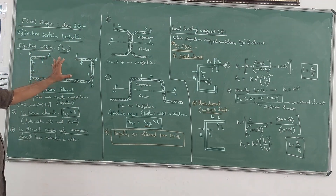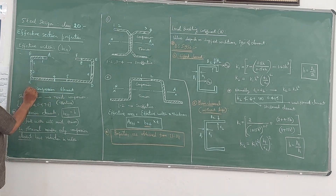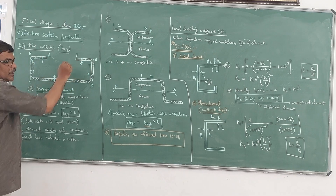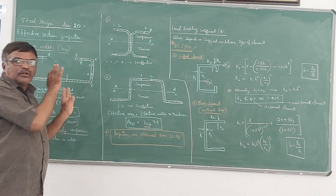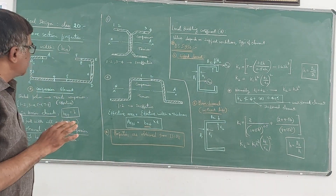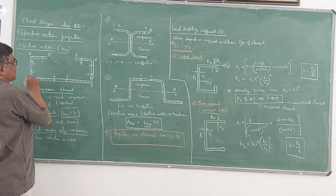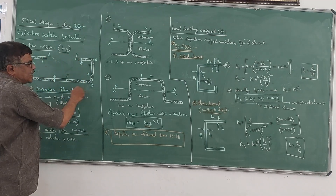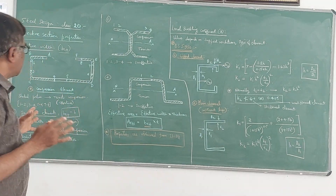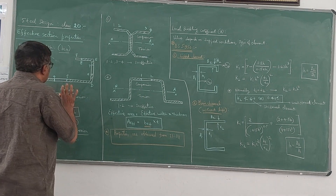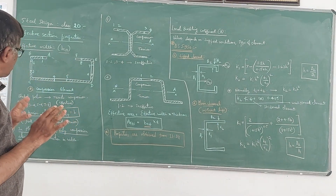The concept of effective width can be explained with an example. Consider a compression element. When an axial compressive load acts on this section, the entire width A, B, C, D, E, F will not be effective in taking the compressive load. Only certain portions of the width will be effective in carrying that compressive force.